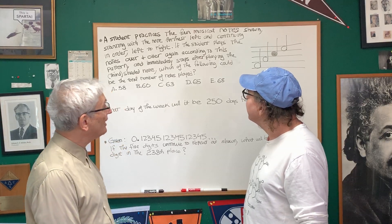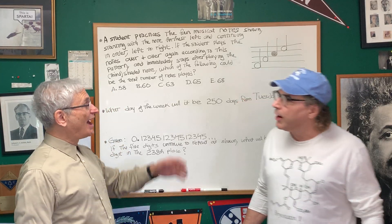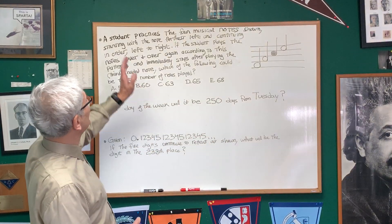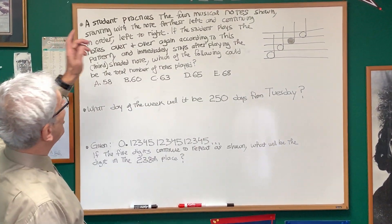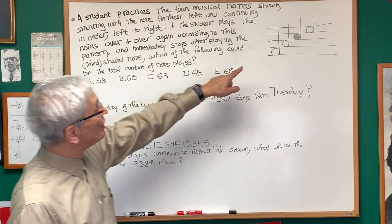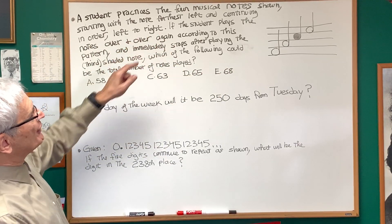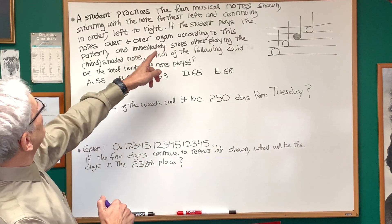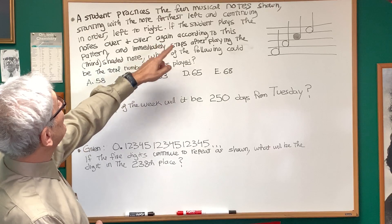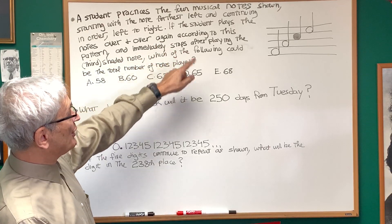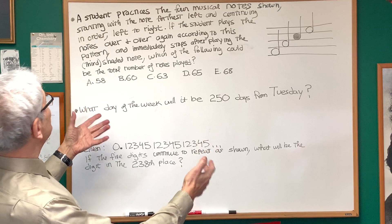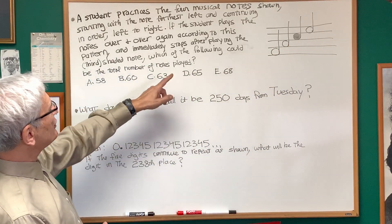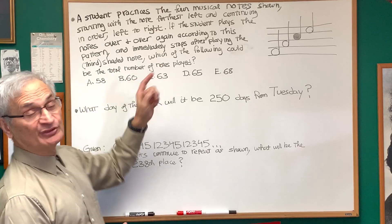This looks very, very exotic. Yeah, it's not all that exotic. I have three problems, but each one of them are related to a similar concept. Let's read the first one, the longest one. A student practices four musical notes as shown, starting with the note furthest to the left and continuing in order left to right. If the student plays the notes over and over again according to this pattern and immediately stops after playing the third note, the shaded note shown, which of the following could be the total number of notes played?